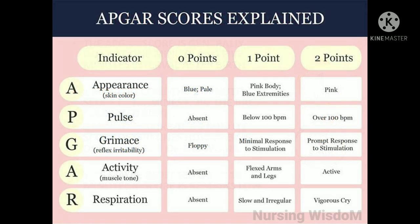This chart indicates the signs and scores. Each category is scored with 0, 1, or 2 depending on the observed condition, and the scores are totaled for a range of 0 to 10. We will be discussing each one by one.